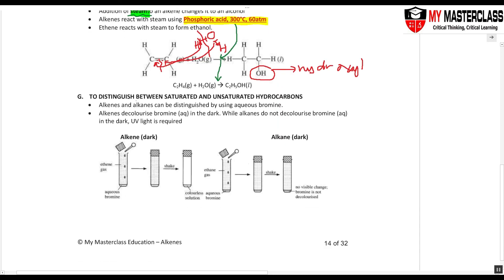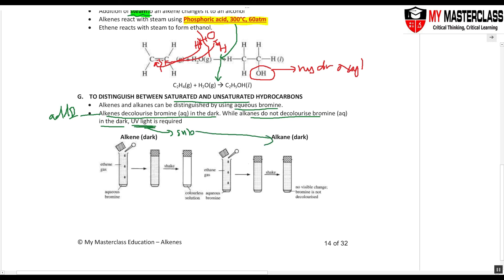To distinguish between saturated and unsaturated hydrocarbons, use aqueous bromine or chlorine gas. Alkenes will decolorize bromine in the dark spontaneously, because the double bond can break to allow addition. Alkanes do not decolorize bromine in the dark — UV light must be shone for the substitution reaction to take place, and in substitution, only one hydrogen atom is replaced at a time.